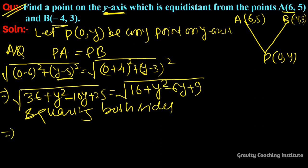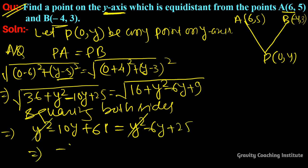So y² minus 10y plus 61 equals y² minus 6y plus 25. y² cancels with y², and minus 10y plus 6y equals 25 minus 61.